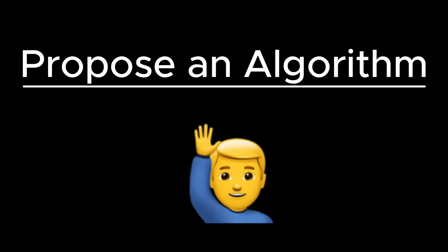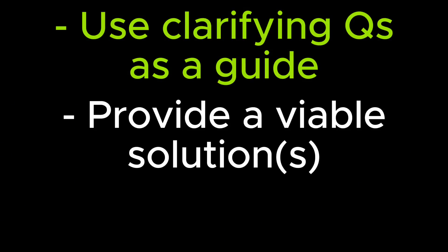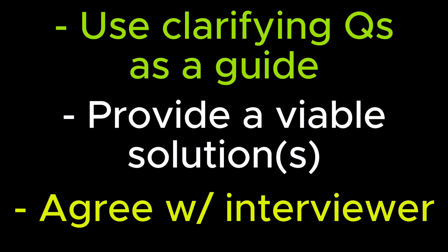The second part of the problem scoping phase is actually proposing an algorithm and explaining how it will work. This is where you take your clarifying questions, you take the prompt of the question, and you actually give the solution. Luckily, most of you guys have watched my channel, you know that most of the time you're going to be asked questions from LeetCode. So you should have already known what the solution will be. So this part shouldn't be too bad. If there's multiple solutions, you can present them, give them to the interviewer and discuss any sort of pros and cons of each, which is actually number three.